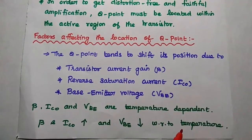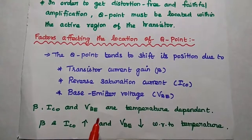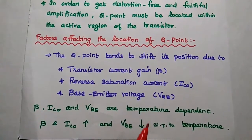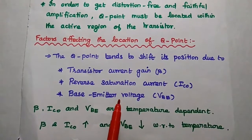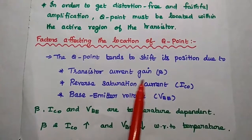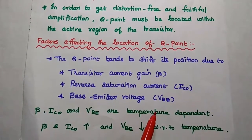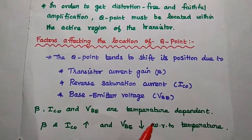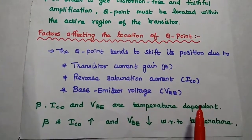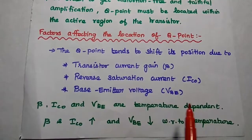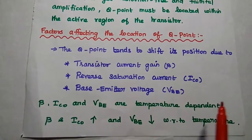These three parameters are temperature dependent. If the temperature increases, the current gain and leakage current both increase, while the input voltage decreases. These three parameters affect the location of the Q point, causing instability — this is called thermal instability. In order to avoid thermal instability, stabilization techniques are used, which will be discussed in the next lecture video.